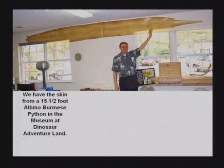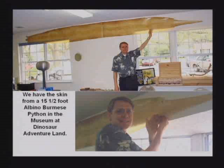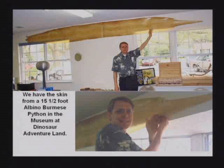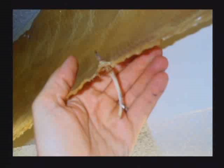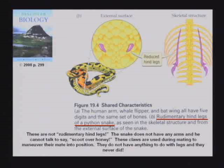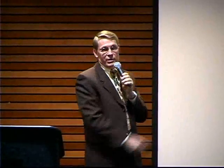Here's a fifteen and a half foot python snake skin I have in my museum. You can see near the anterior end it has little tiny claws — one here and one here — attached to a little tiny bone that goes up inside the snake's body. The textbook says these rudimentary hind legs of a python snake are supposed to be evidence for evolution. Those are not rudimentary hind legs — those are used in mating. The snake doesn't have any arms. This has nothing to do with a snake walking on land. They are so desperate for evidence for evolution that this becomes evidence for evolution, and it's not.